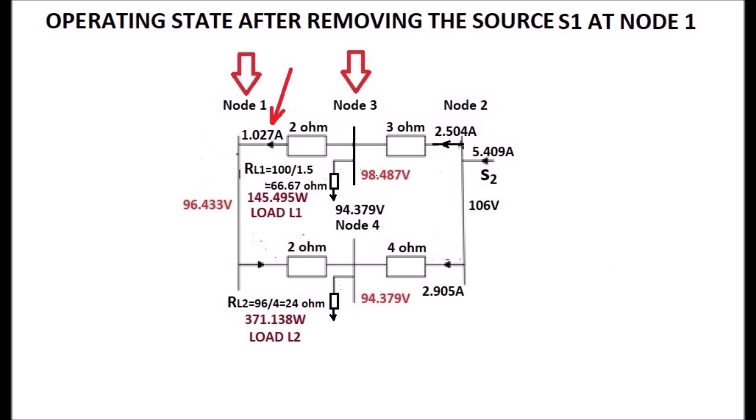Node 3, 1, and 4 voltages are reduced to 98.487 volts, 96.433 volts, and 94.379 volts, respectively. Load powers are also reduced.